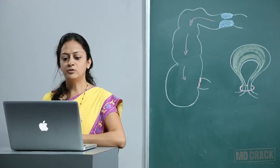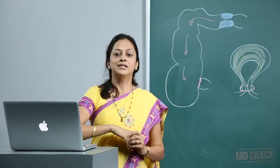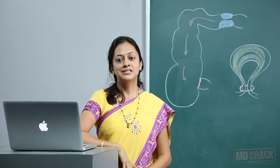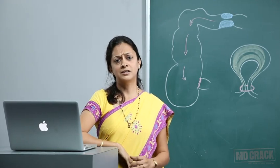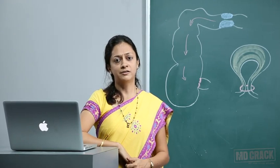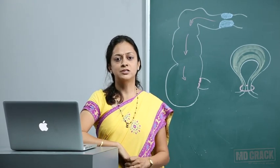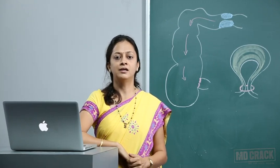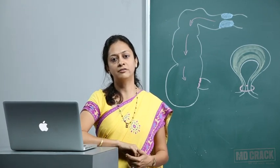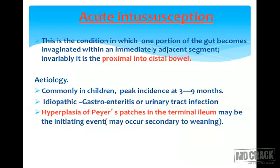Acute intussusception is a very important topic as it is maximally asked in competitive exams — important clinically, in emergency, and in exams. Acute intussusception is the condition in which one portion of the gut becomes invaginated within the immediately adjacent segment. Invariably, it is the proximal segment into the distal bowel.